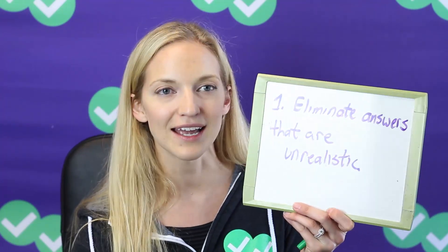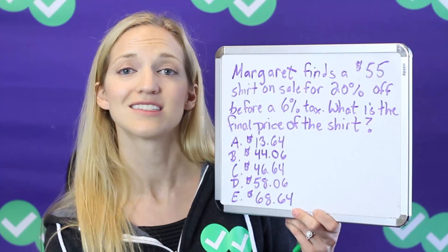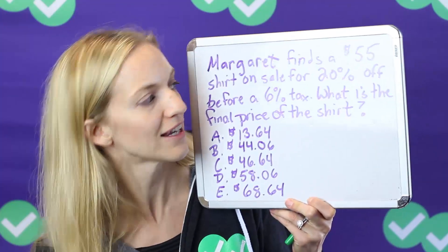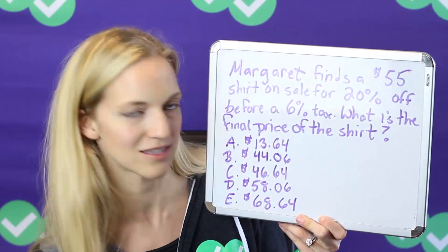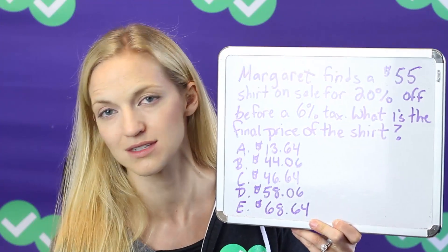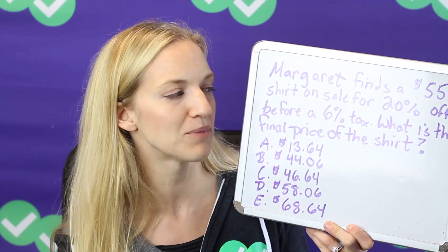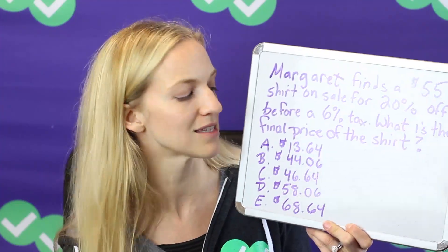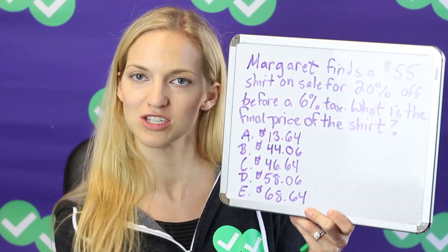The first way is to eliminate answer choices that are unrealistic. You're going to see a lot of word problems on the ACT, and oftentimes they're about real world situations. You won't find something like a sweater that costs two cents or nine million dollars. Let's take a look at a question and talk about how we can use estimation to narrow down answer choices. Maybe we won't be able to entirely solve it, but we'll take a much better guess just by using some estimation.